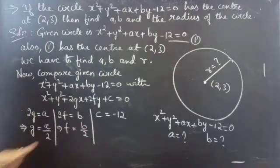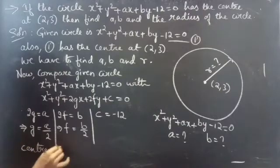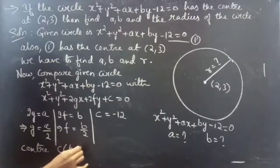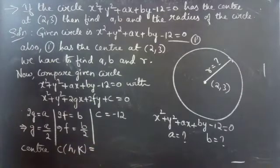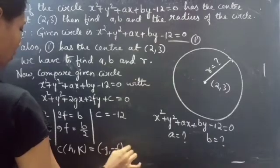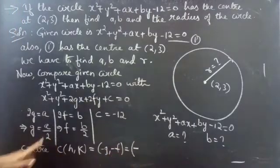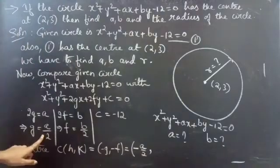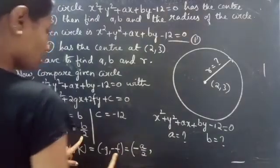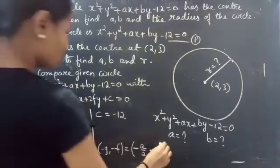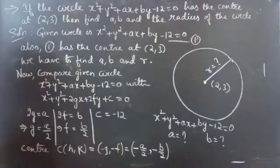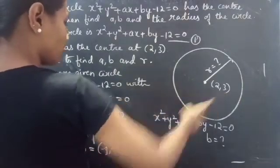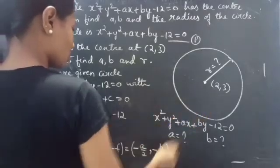From this we can find the center. Since we know that center C(h, k) = (-g, -f), we have the x-coordinate of center as -a/2 and the y-coordinate as -b/2. From the hypothesis, we have center (2, 3) and we got center (-a/2, -b/2). So we will equate these two centers.